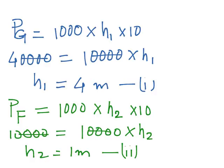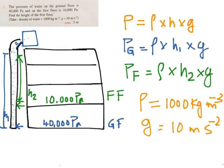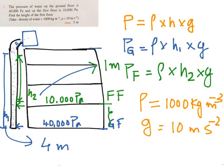So from these two equations what we are getting? h1 we are getting as 4 meters and h2 we are getting as 1 meter. So if this entire height h1 is 4 meters from the top till here is 4 meters, and if h2 till here is 1 meter, so how much is this?